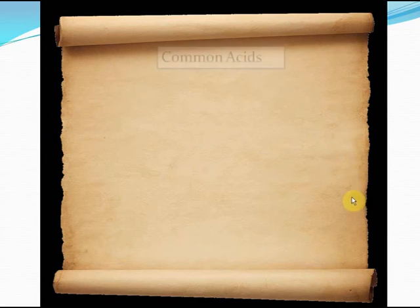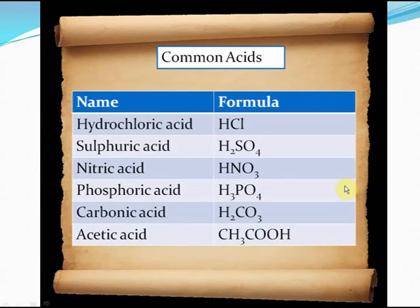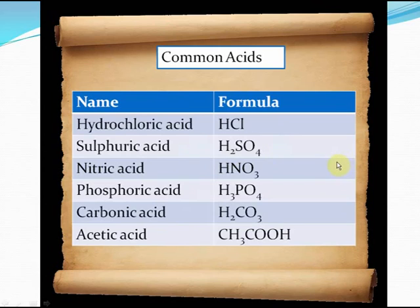Let's have a look at some common acids. These are: hydrochloric acid HCl, sulfuric acid H2SO4, nitric acid HNO3, phosphoric acid H3PO4, carbonic acid H2CO3, and acetic acid H2CO3. You must remember the formulae of all these acids because they are very common acids in the laboratory.